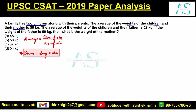So we can say child 1 plus child 2 plus the weight of the mother equals average 50 into the number, that is 3. Therefore, C1 plus C2 plus M is actually 150.